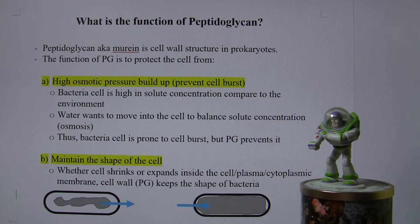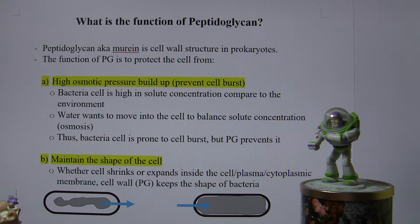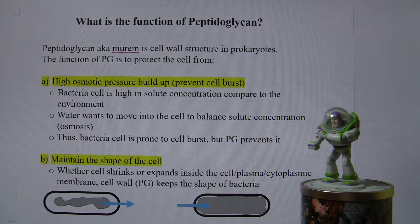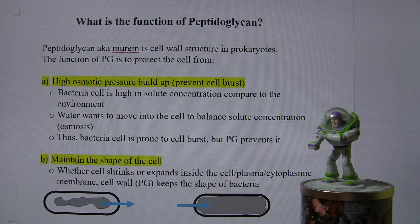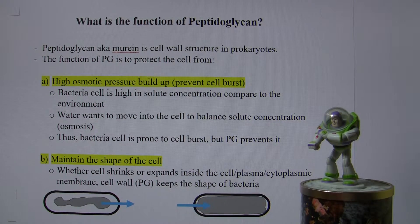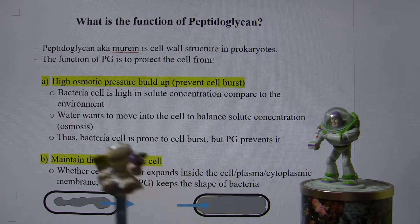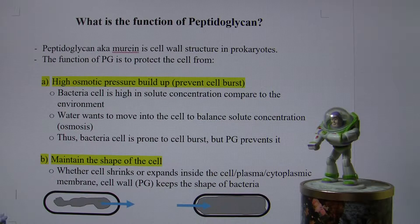How does it do that? Bacteria cells have higher solute concentration inside compared to most of the environment — unless you're in somewhere like the Sahara or the Dead Sea where water has a very high concentration of solutes. But usually the bacterial cell has higher solute concentration, which means water would move into the cell, because water moves from low to higher solute concentration to balance concentrations. This is called osmosis.